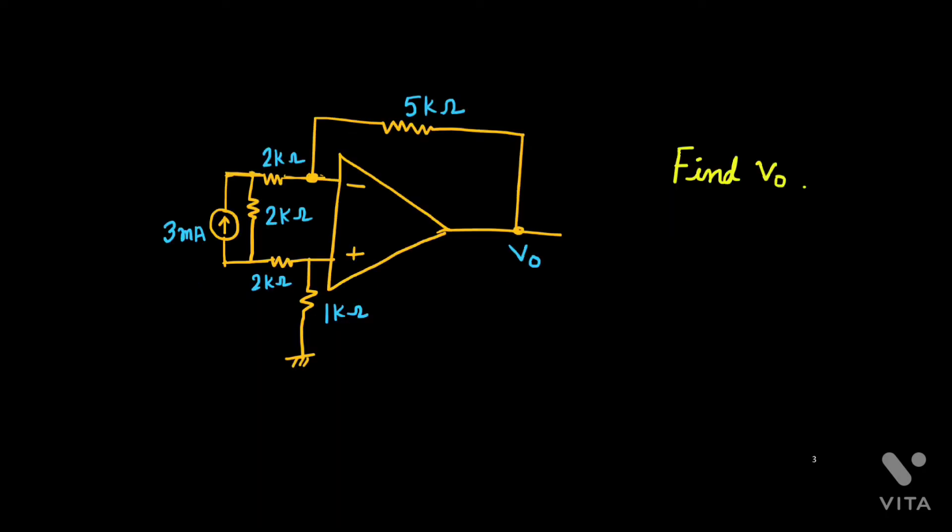In this video, I will discuss this problem. Now look at the figure given here. Here you will see there is a practical current source 3 milliamps along with its resistance 2 kilo ohm connected with this op-amp circuit.